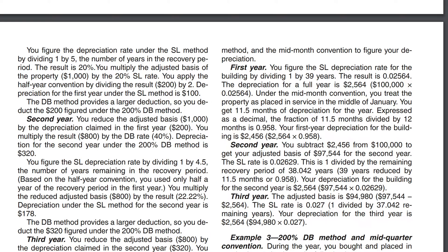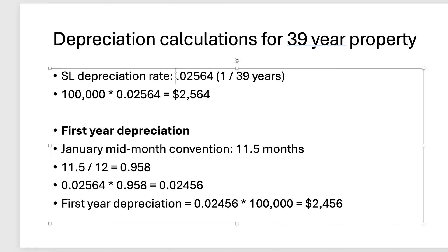I've put together a PowerPoint to help walk through the calculation. The first thing we need to do is calculate straight-line depreciation over a 39-year recovery period: 1 divided by 39 equals 0.02564. We multiply that by the $100,000 basis, and over 39 years we would take $2,564 in depreciation each year. However, we do have to account for the first year using the mid-month convention.